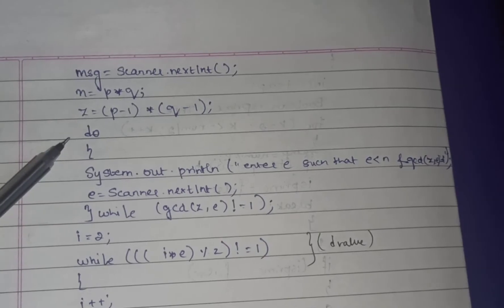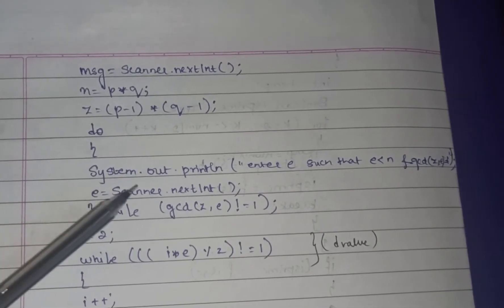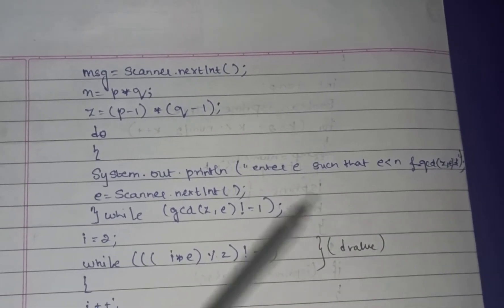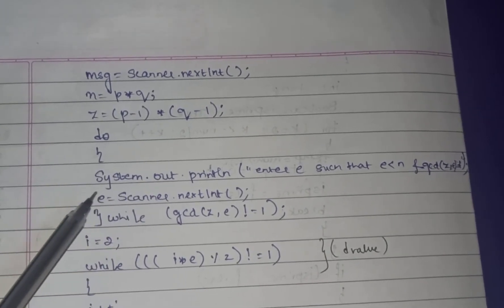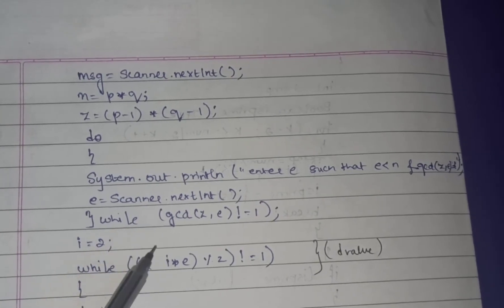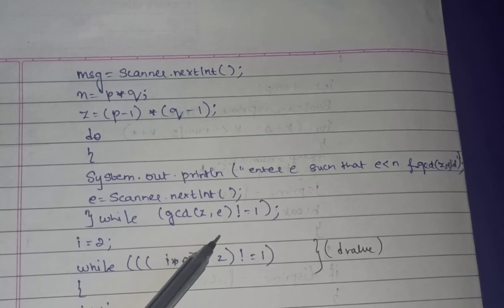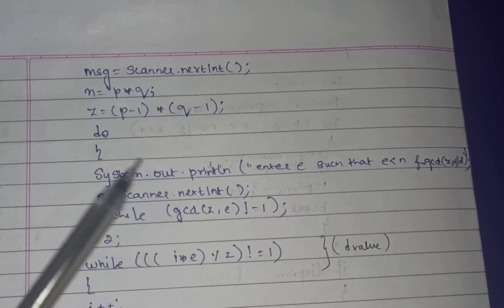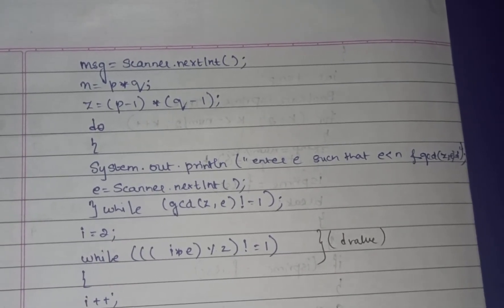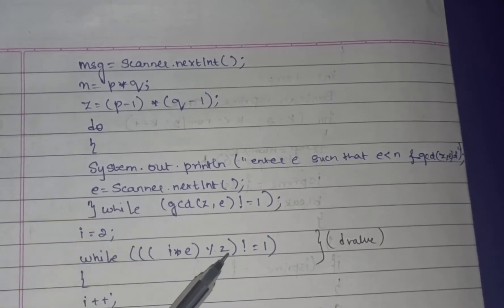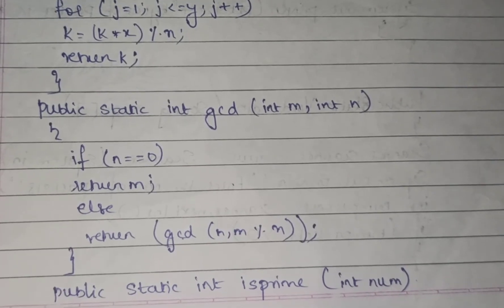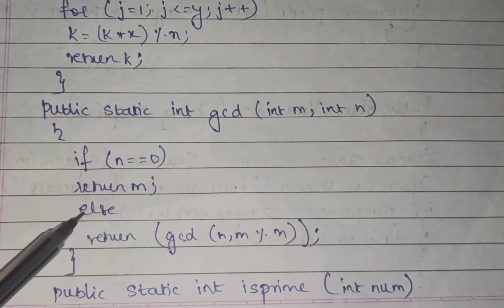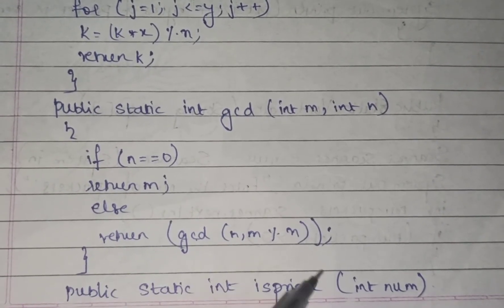A do-while loop prompts the user to enter e, such that e < n and gcd(z, e) = 1. The Scanner reads e, and the while condition keeps looping until gcd(z, e) equals 1. The gcd function is recursive: it takes int m and n; if n == 0, return m, else return gcd(n, m mod n).